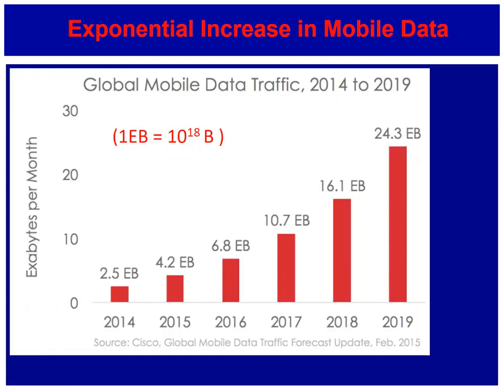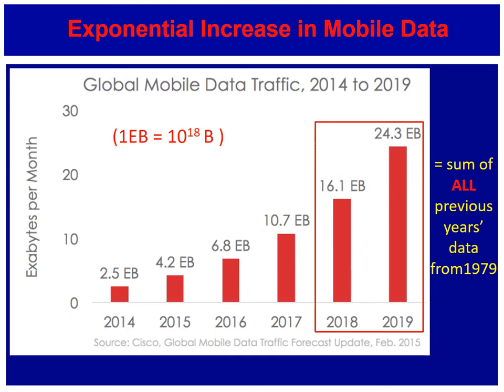The problem is there's an exponential increase in mobile data. We have a data forecast for 2014 up to 2019, plotting exabytes per month — an exabyte is a 1 with 18 zeros after it. What we mean by exponential increase is that for any two consecutive years, the amount of global mobile data traffic will equal the sum of all data ever transmitted right back to the origin of the cell phone. That's exponential increase, and it's completely and utterly unsustainable.